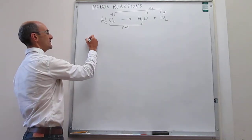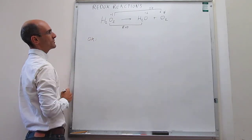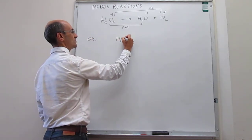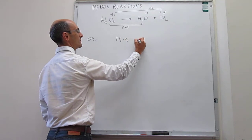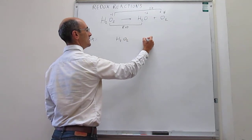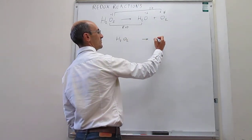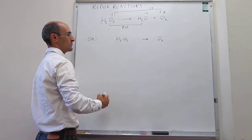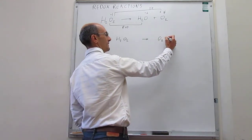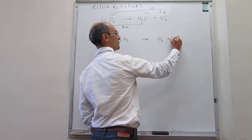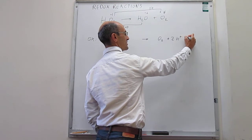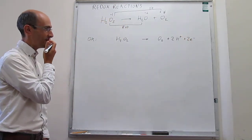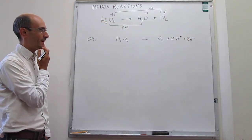The oxidation half-reaction is hydrogen peroxide generating O₂. We need to balance the hydrogen atoms by adding two protons, then balance the charge by adding two electrons. That half-reaction is now balanced.